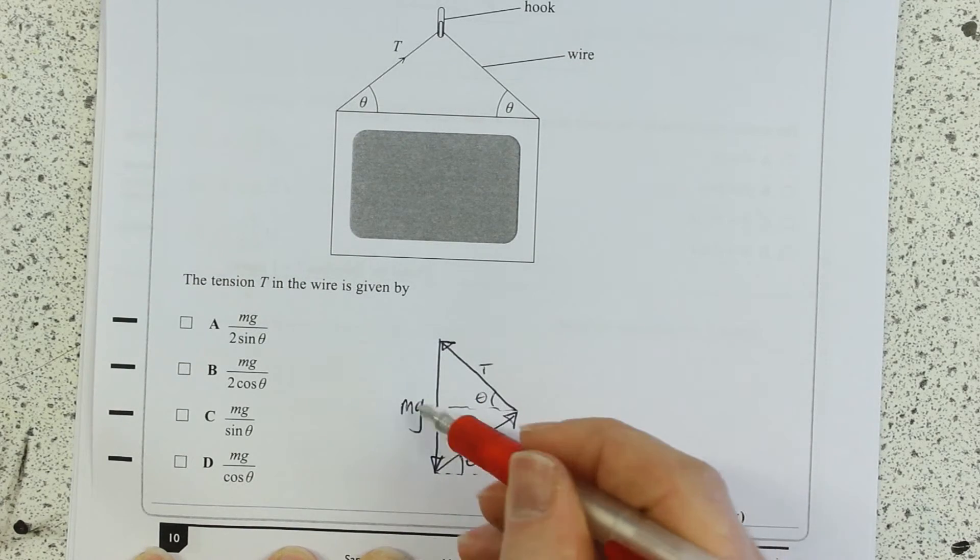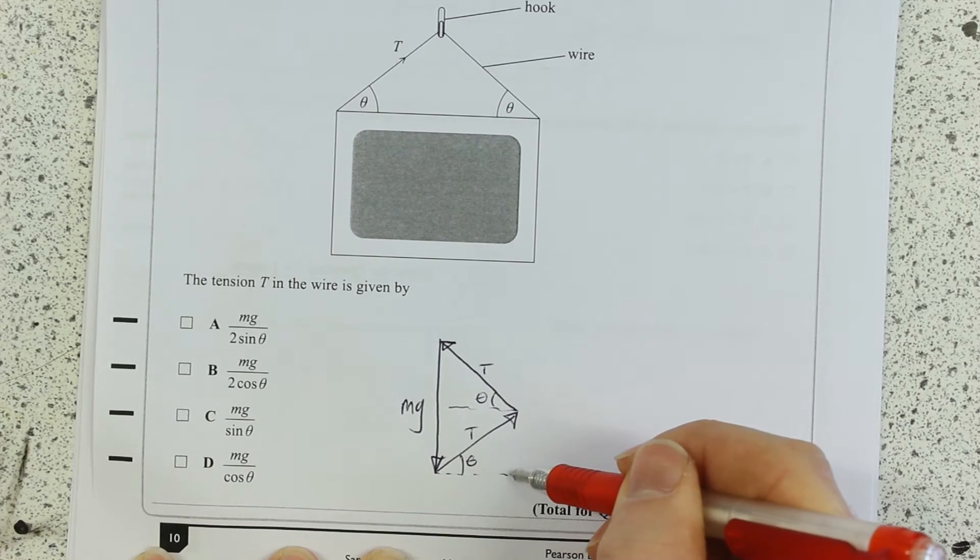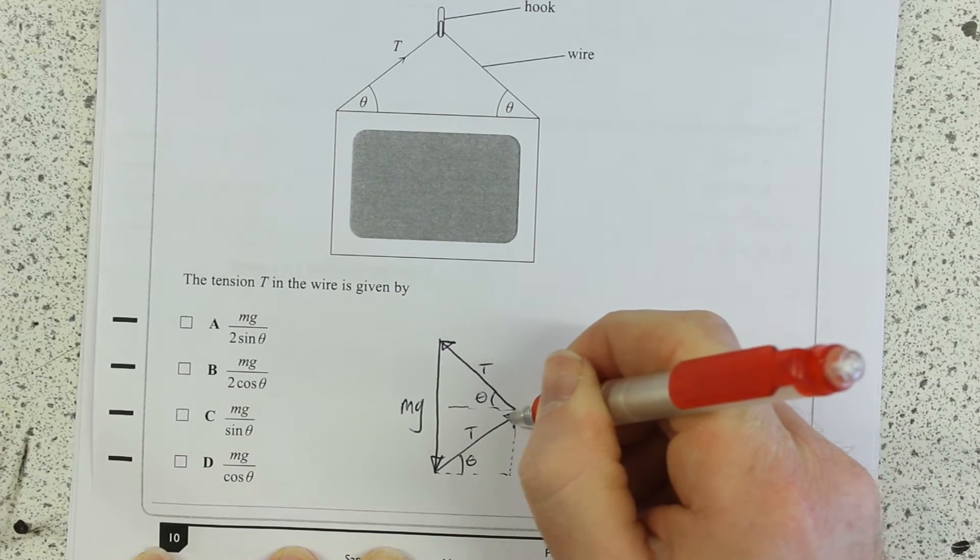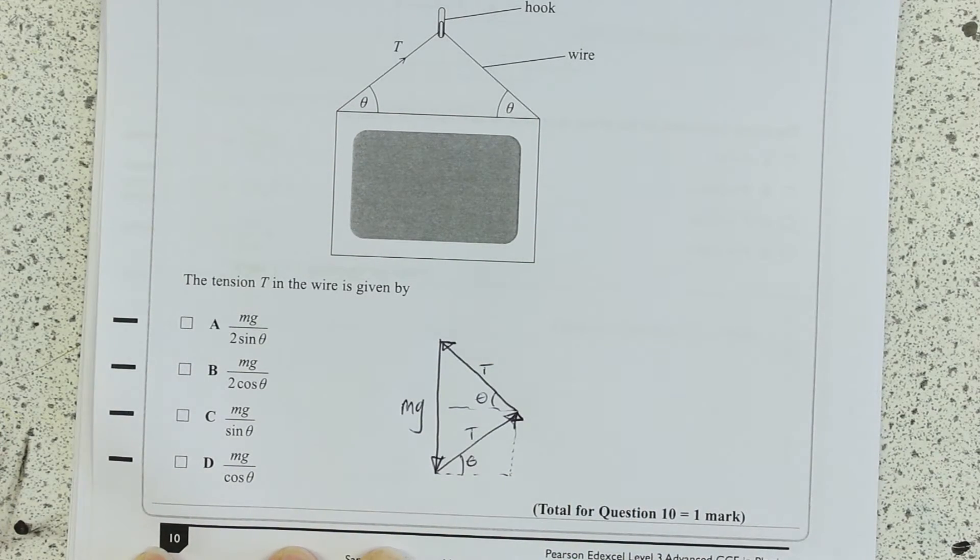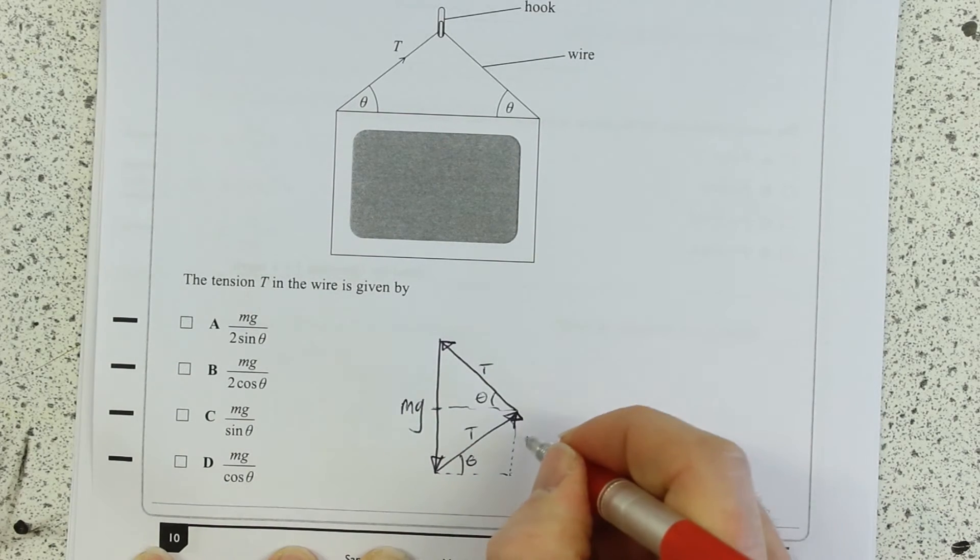Okay, so we know that Mg adds up to the vertical component of these two tensions. So what I'm essentially trying to work out first is what's the vertical component of the two tensions. And I know that vertical component must equal half of Mg.